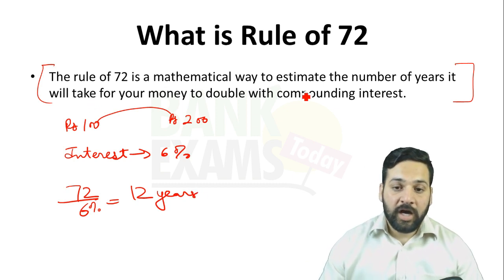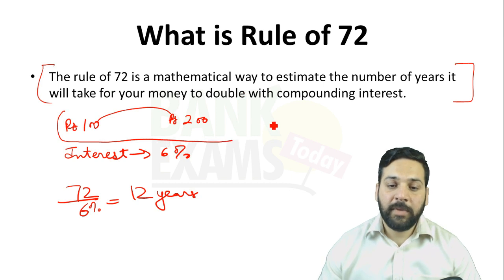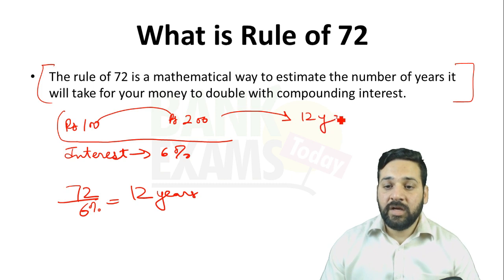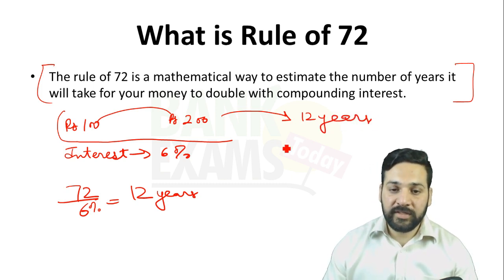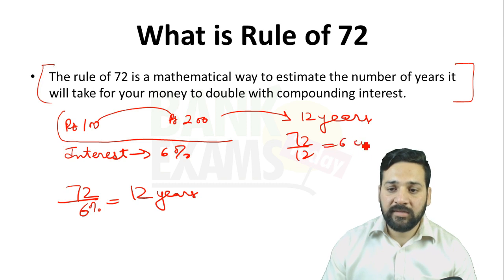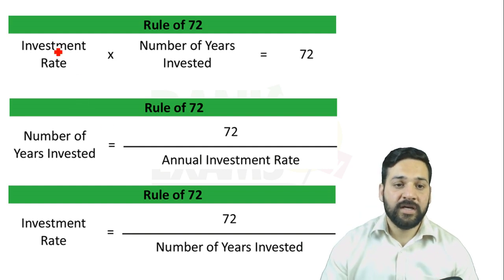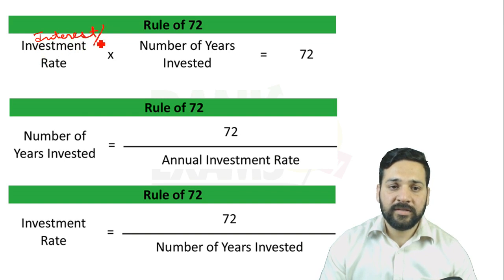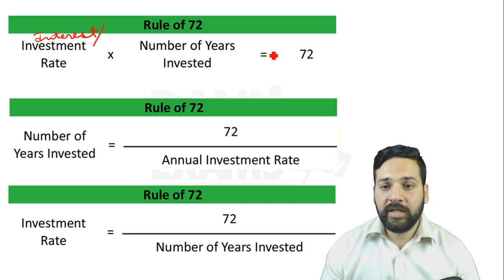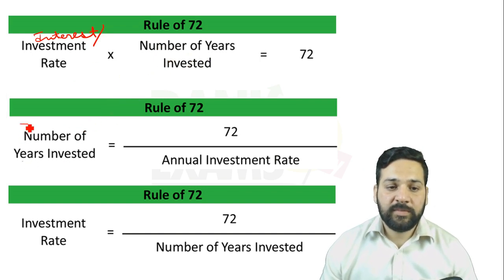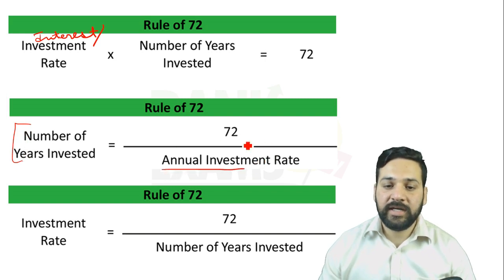Let's take it another way: how much time will it take to double a sum of money if it is invested for 12 years? What should be the rate of interest? Again, 72 divided by 12 equals 6%. So the simple formula is: interest rate multiplied by number of years of investment equals 72. In other words, number of years of investment equals 72 divided by the annual interest rate.